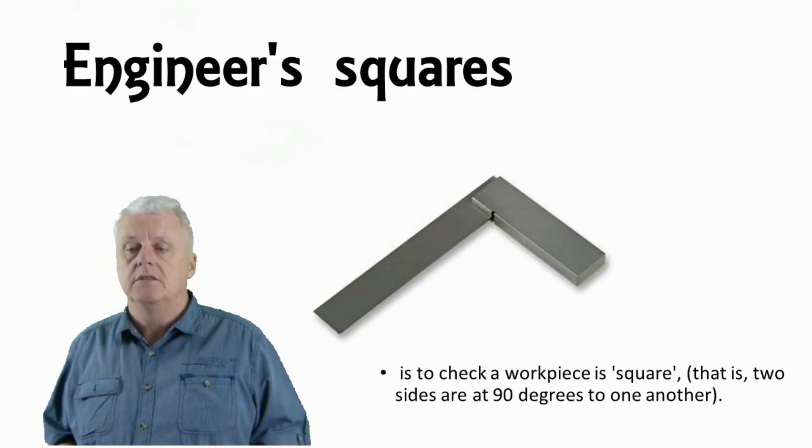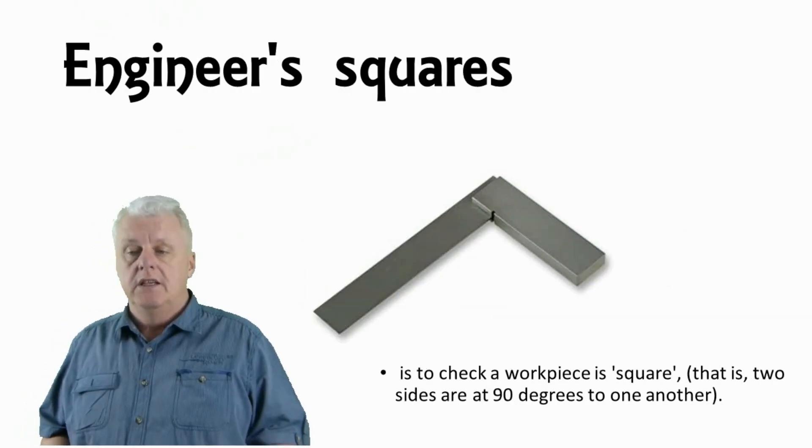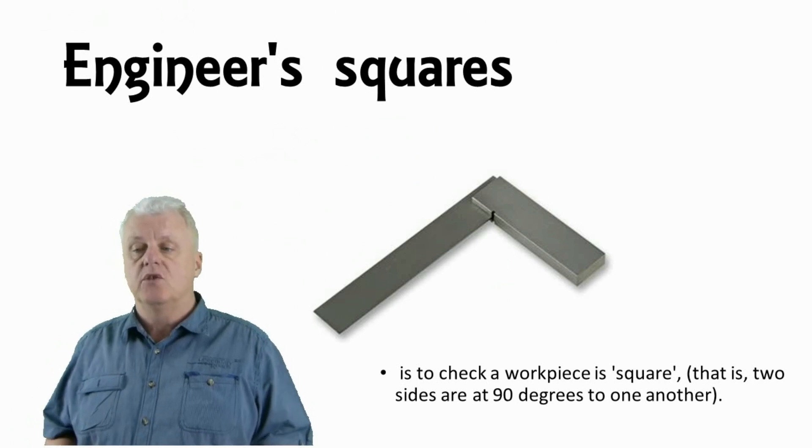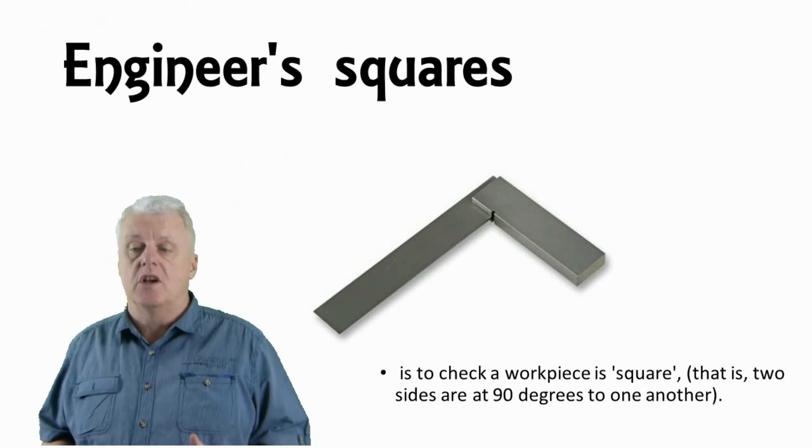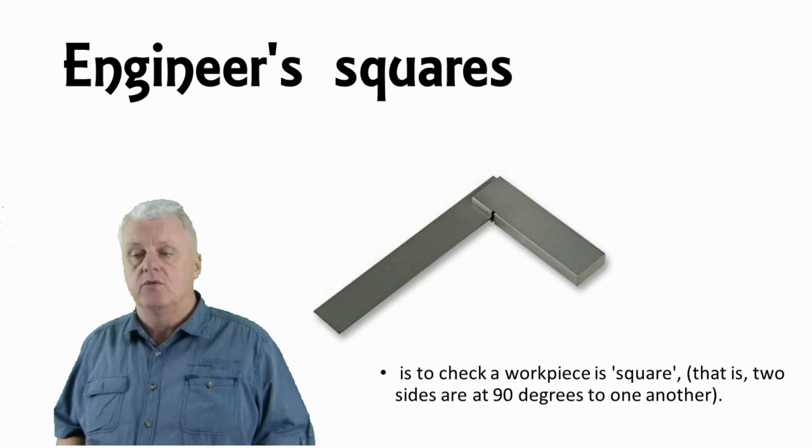Engineer squares. An engineer square is to check a workpiece is square, that is that two sides are at 90 degrees to one another.